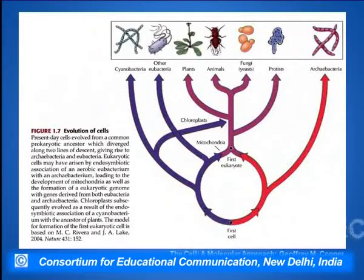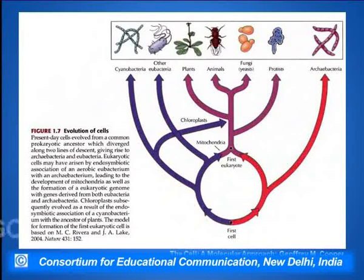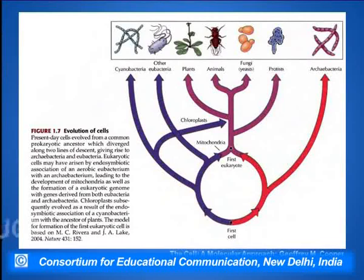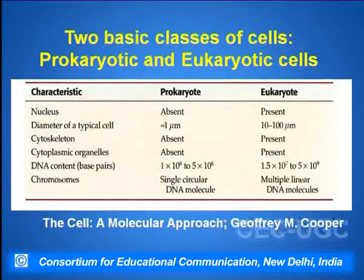This is a diagrammatic representation showing how from the first cell the origin takes place of the various organisms and plant systems, how the cyanobacteria got developed, how the plants got developed, the animal kingdoms got developed, and archaea got developed over a period of time, and how exactly they diverged from one another to form different classes or species of organisms.